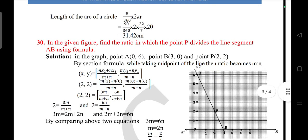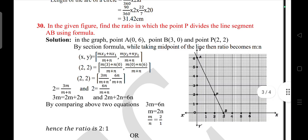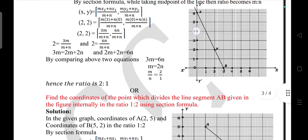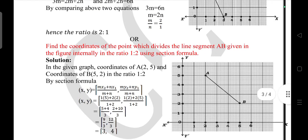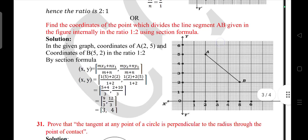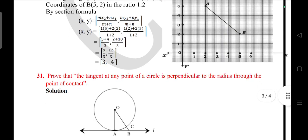Question 32: In the given figure, find the ratio in which point P divides the line segment AB by using the section formula. Or, find the coordinates of the point which divides the line segment AB given in the figure internally in the ratio 1:2. Question 33: Prove that the tangent at any point of a circle is perpendicular to the radius drawn through the point of contact.